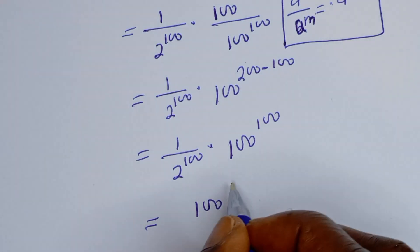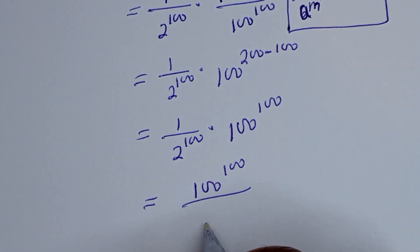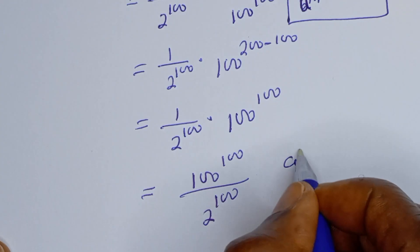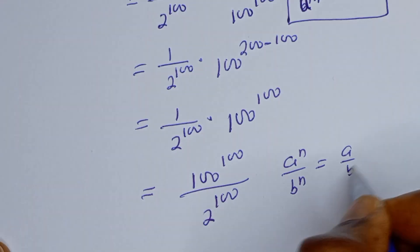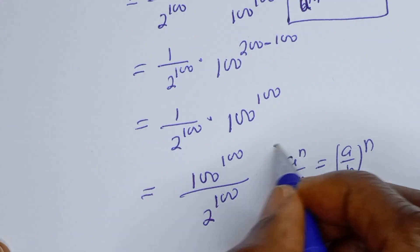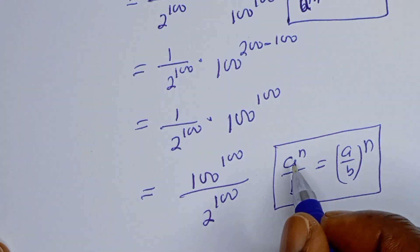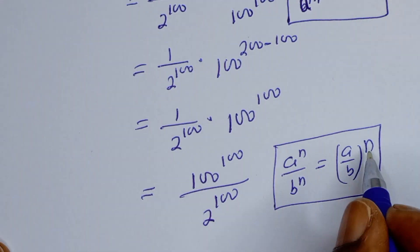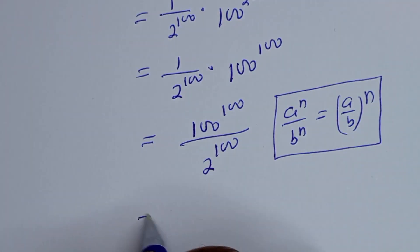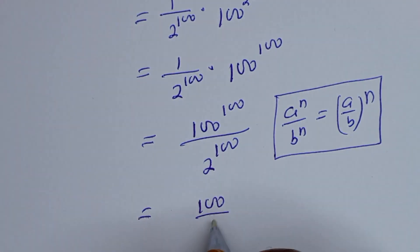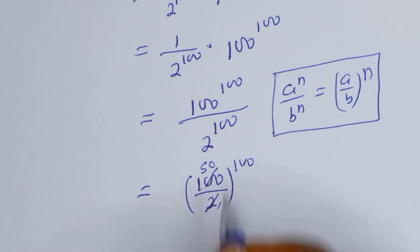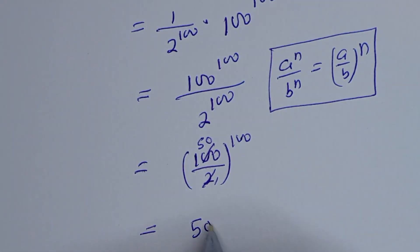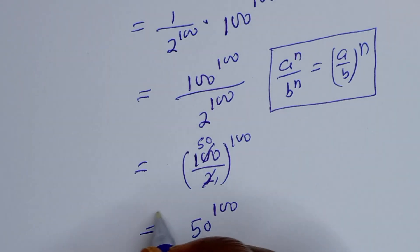Then, 1 over 2 to the power of 100 — if you have a to the power of n divided by b to the power of n, this is equal to (a over b) to the power of n. Then here it is 100 divided by 2, to the power of 100, and this is the final answer.